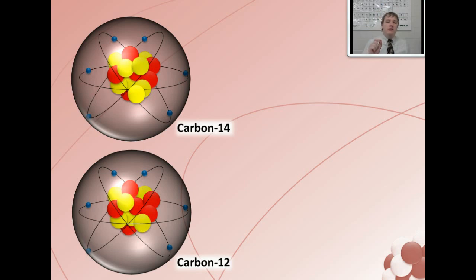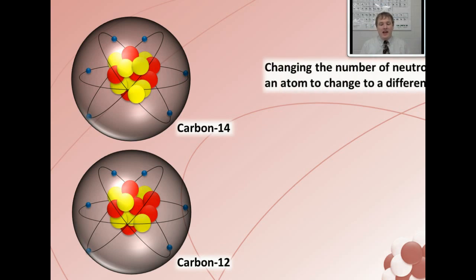Whereas carbon-14 has too many neutrons. It doesn't have a stable nucleus and carbon-14 will break down over time. It is radioactive. And that's what happens when you change the number of neutrons. You change the atom to something called a different isotope.